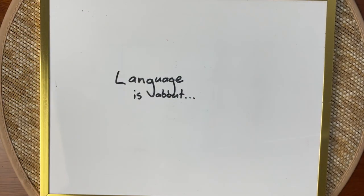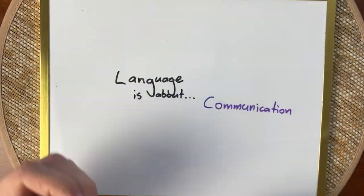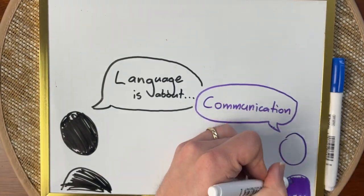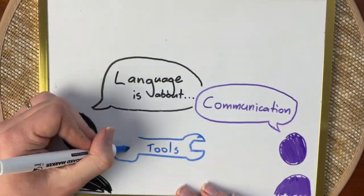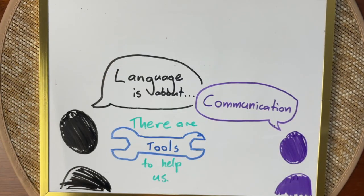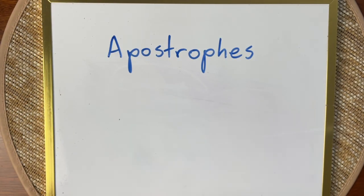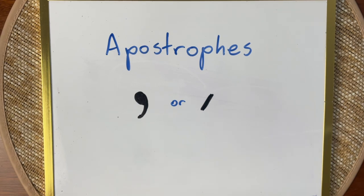Language is about communication. When we write, we want our meaning to be clear and to avoid confusion. We have a number of tools to help us with that — we might call them the conventions of writing. One of the tools we have is punctuation: the marks on the page that aren't letters or words that help us make our meaning clear. Today, we're going to talk about apostrophes. They're marks that sit well above the line, and they may look like a curved mark or just a line.